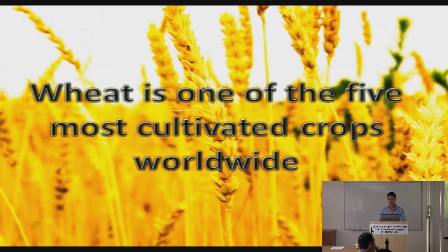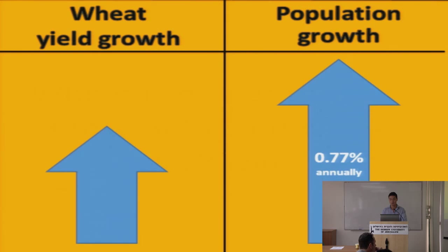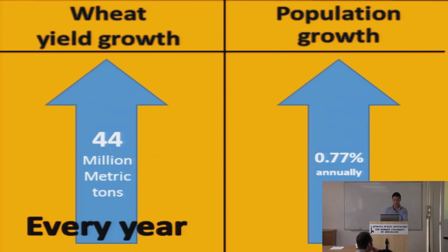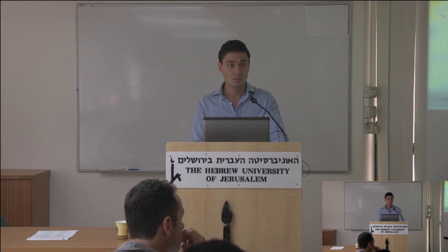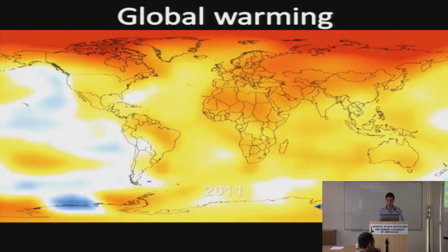Wheat is one of the five most cultivated crops worldwide. Nowadays with the population growth, there is a deficit in wheat yield production. In order to balance the wheat yield production, the wheat yield has to increase by about 45 million metric tons every year. But this is not an easy task, since we have factors such as global warming affecting climate — now two degrees more than in the 1960s.